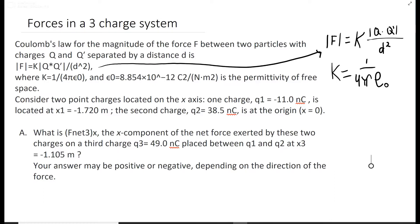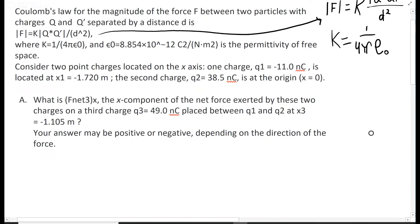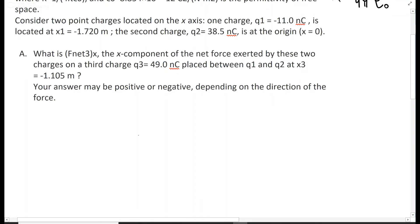Also gives us k equals 1 over 4π epsilon, where epsilon is 8.85 times 10 to the negative 12th, the permittivity of free space. So our situation is, it gives us some charges. One charge q1 is at negative 1.72 meters, and we have a second charge at zero.